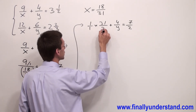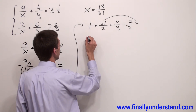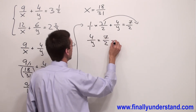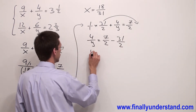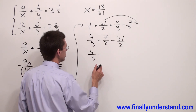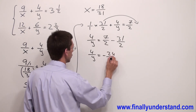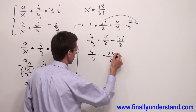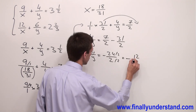Since the 31 over 2 term doesn't contain y, I move it to the right side: 4 over y equals 7 over 2 minus 31 over 2. We have a common denominator, so 4 over y equals 7 minus 31 over 2, which equals negative 24 over 2. We can reduce this fraction by 2, giving negative 12 over 1.